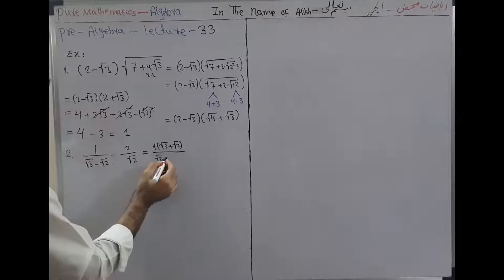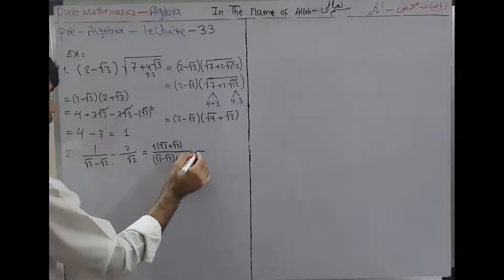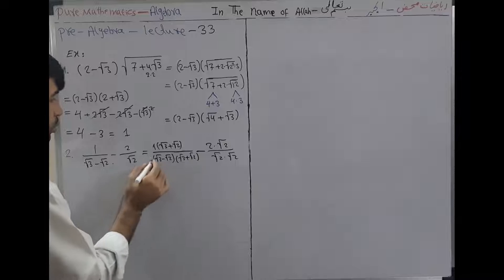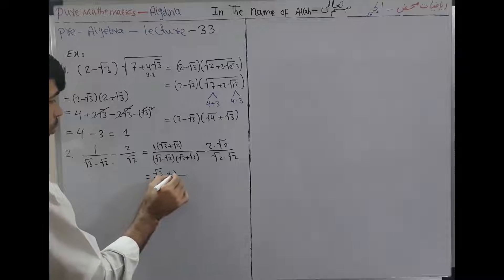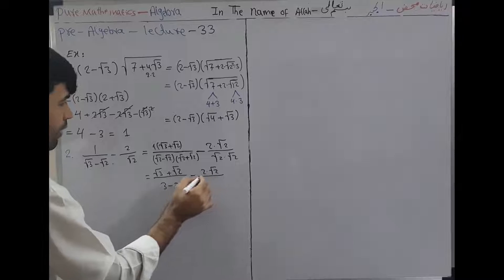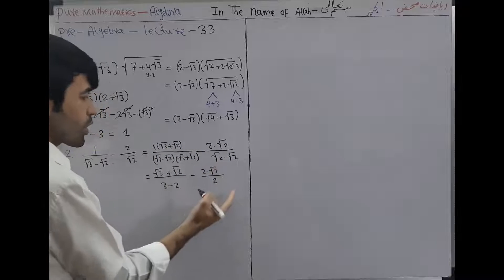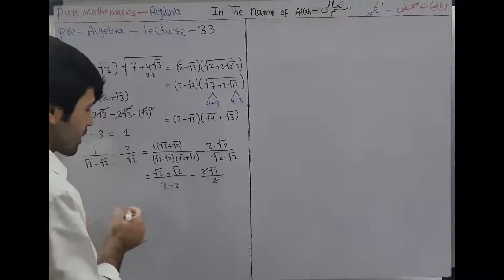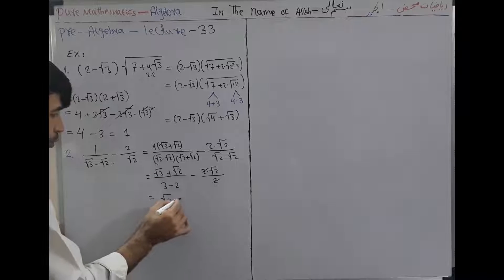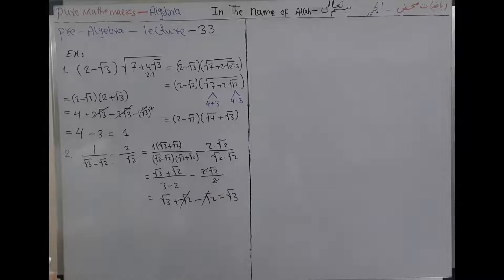The denominator becomes 3 - 2 = 1, so the first term is (√3 + √2). The second term: 2·√2 over √2·√2 = 2√2/2 = √2. So the full expression becomes √3 + √2 - √2. These two √2 terms cancel, giving √3. That is the answer to Question 2.